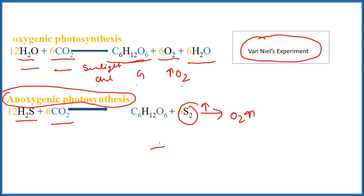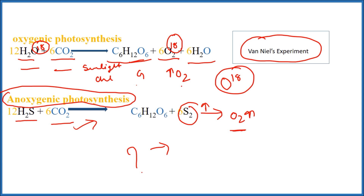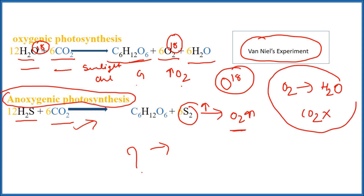If the previous hypothesis was right — that oxygen is evolved from carbon dioxide — there must have been an evolution of oxygen in this reaction. But there was no evolution of O2. He then used a radioactive element and found that this radioactive element was evolved in the reaction. After his experiment, it was proved that the oxygen which is evolved in photosynthesis is coming from water, not from carbon dioxide.